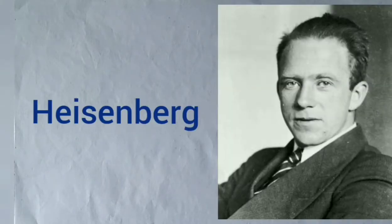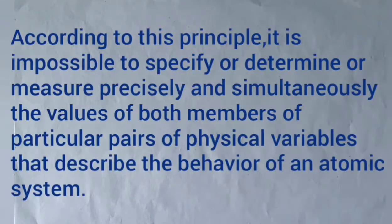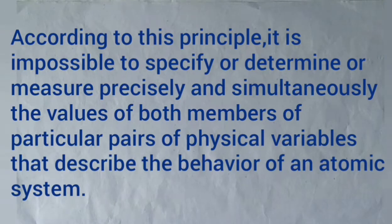The uncertainty principle was developed by Heisenberg in 1927. According to this principle, it is impossible to specify or determine or measure precisely and simultaneously the values of both members of particular pairs of physical variables that describe the behaviour of an atomic system.